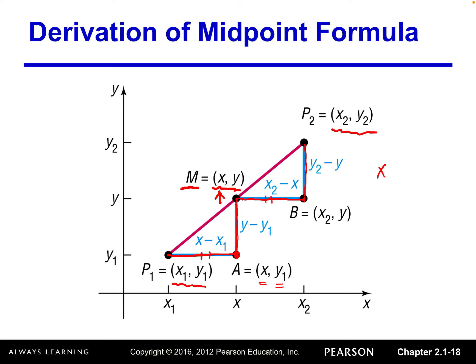Same idea for point B because it's a horizontal line of this point. So it has the same Y coordinate as the midpoint and has the same X coordinate as P2.